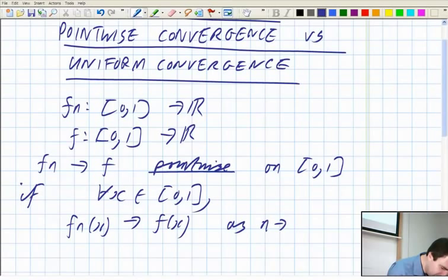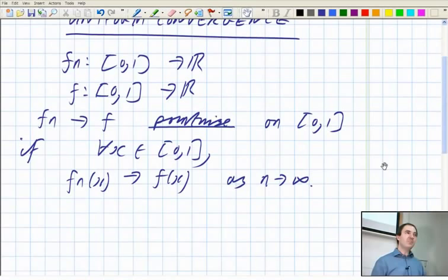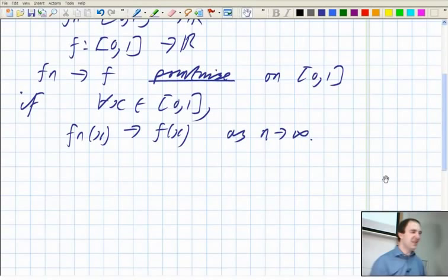Where the convergence may be different speeds at different places. Now, a sequence of continuous functions can converge pointwise to a discontinuous function. Does anyone remember an example of that? x to the n. That's the standard example I usually give. A well-known example.